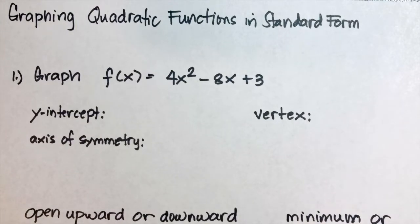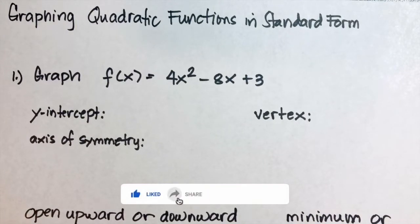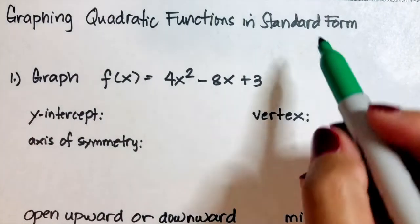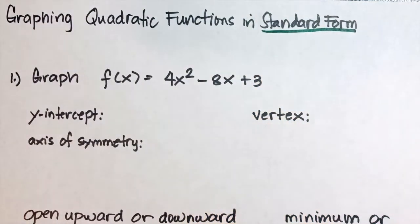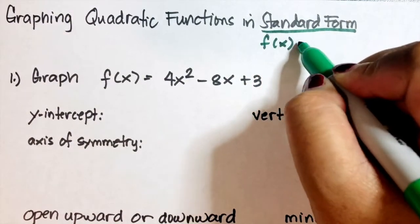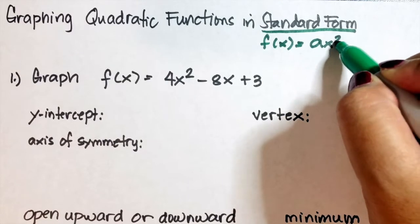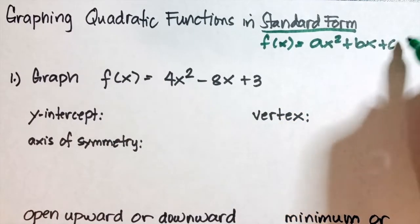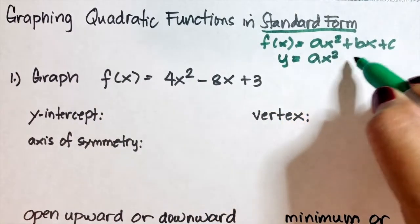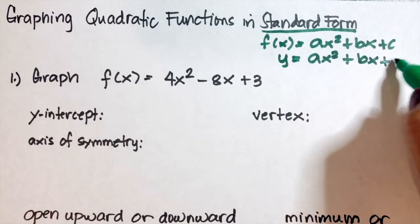In this video we will go over graphing quadratic functions algebraically and its properties. You can use a graphing calculator or Desmos calculator, but I will show that in my next video. The standard form of a quadratic function is f(x) = ax² + bx + c, or y = ax² + bx + c.